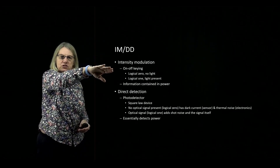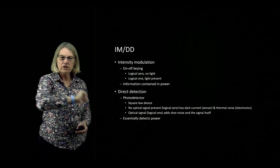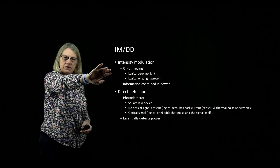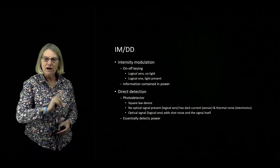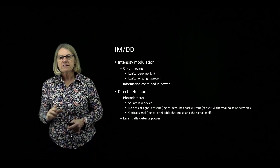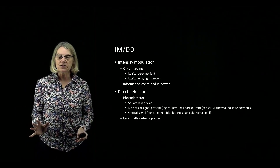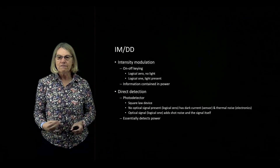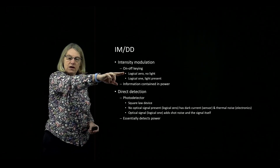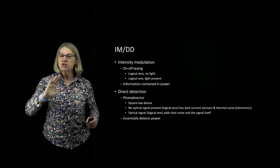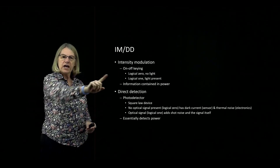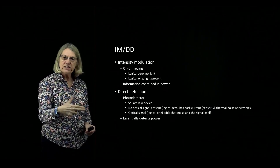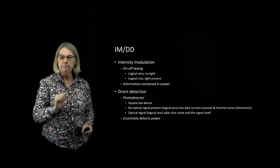The IM refers to intensity modulation, whereas the DD refers to direct detection. Let's start with the transmitter side where we're talking about intensity modulation. The simplest example of intensity modulation is for a binary data transmission. In this case, the logical 0 will send no light, no power. For a logical 1, we will send light.